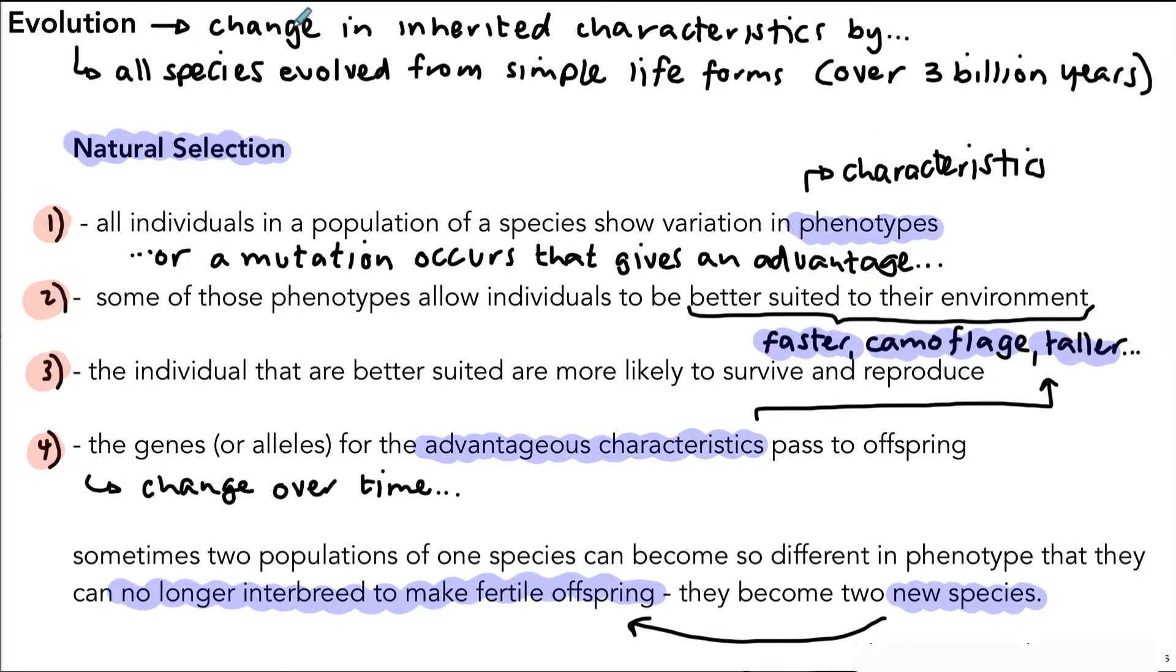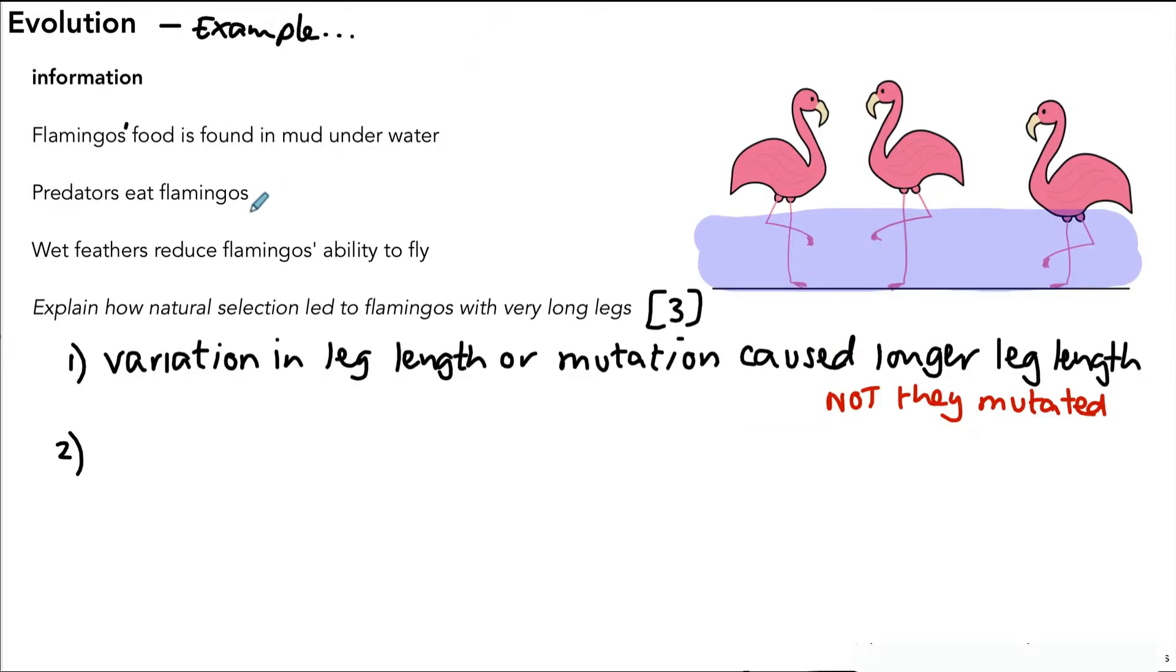Now for the second point, it might be tempting to say that some individuals were better suited to their environment and therefore had an advantage, but the question is very specific. It tells you predators eat flamingos and wet feathers reduce the flamingos' ability to fly. So we have to say what particular advantage having longer legs gave the flamingos. We could say that those with longer legs could escape predators. That's one possible thing based on the clues they've given. You could also say that longer legs meant they were less likely to get wet feathers.